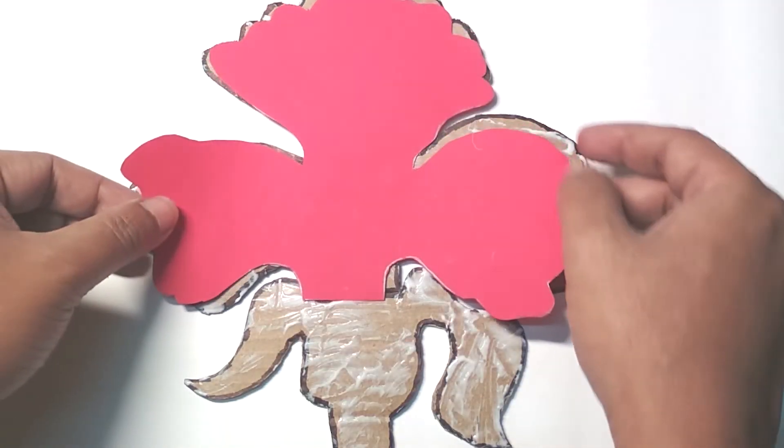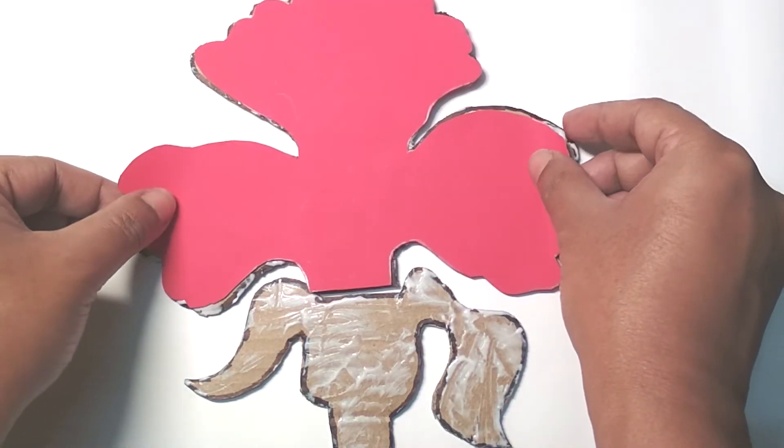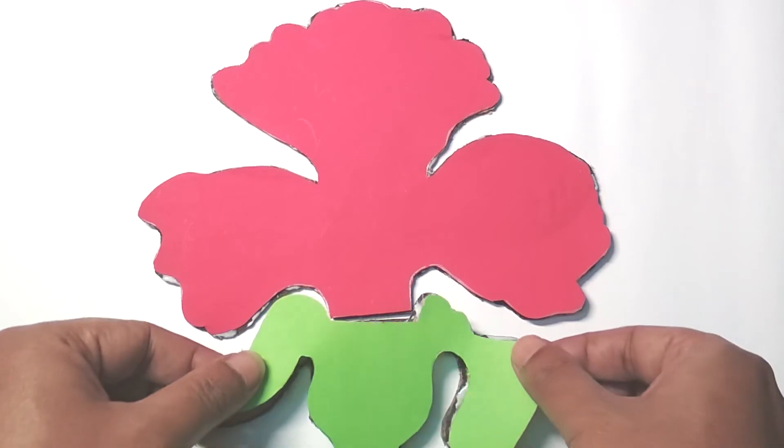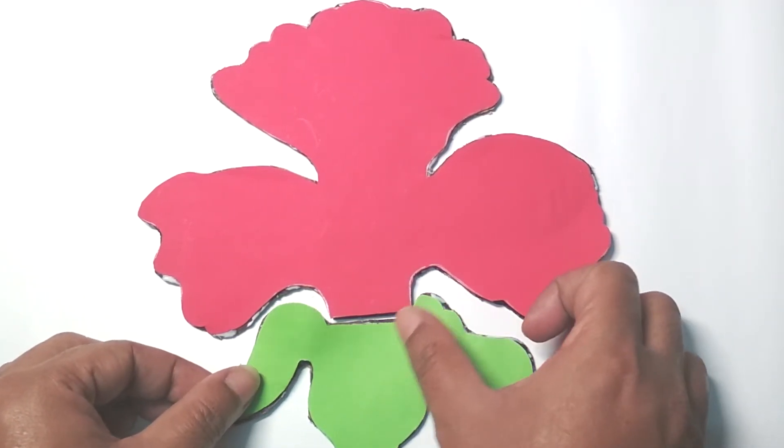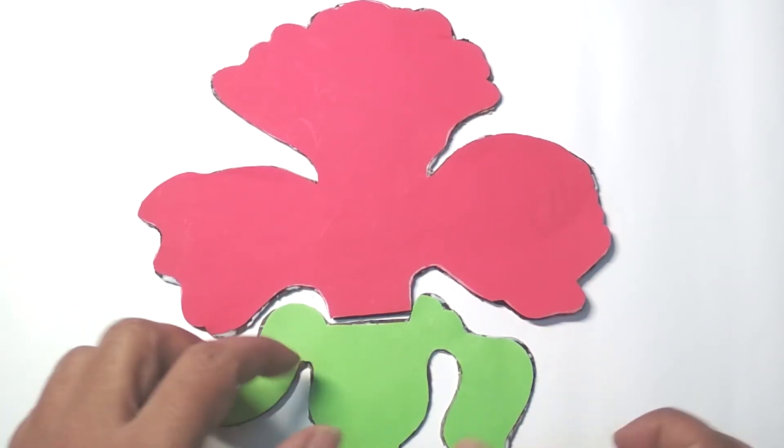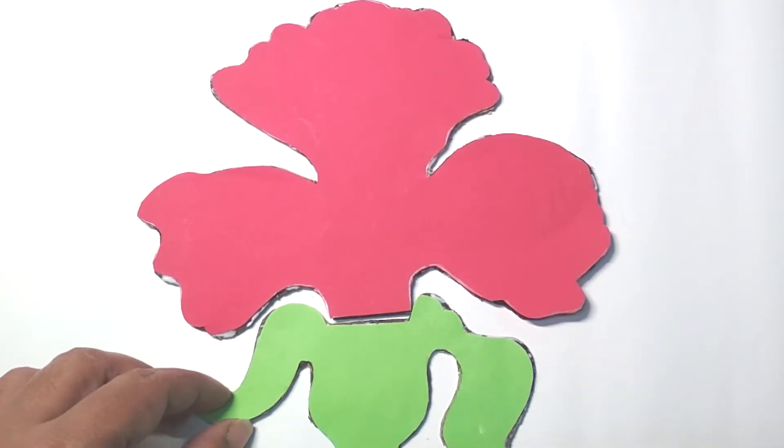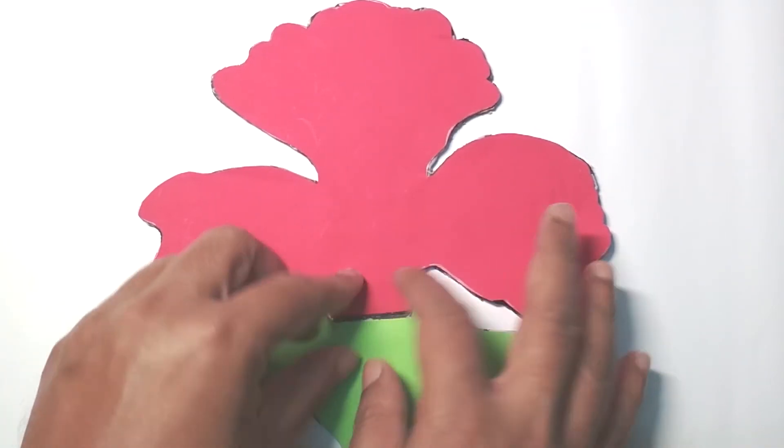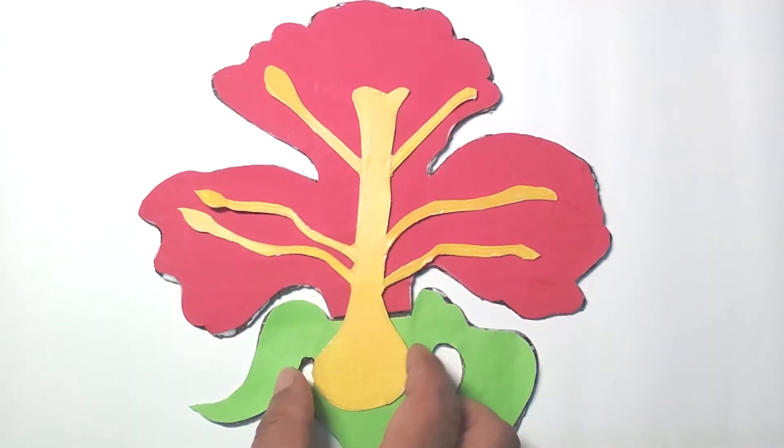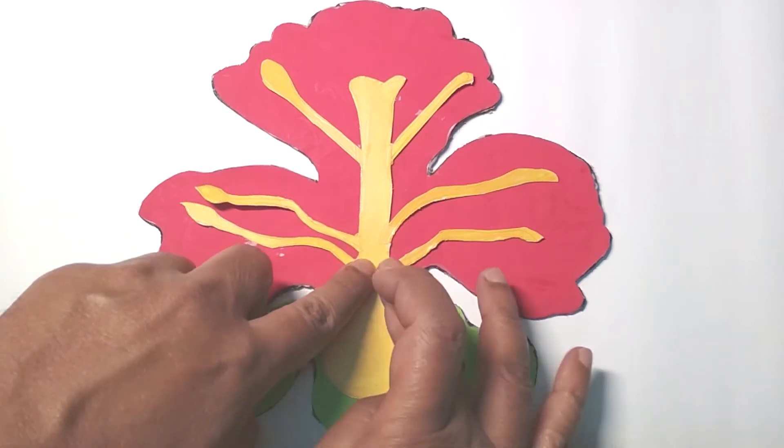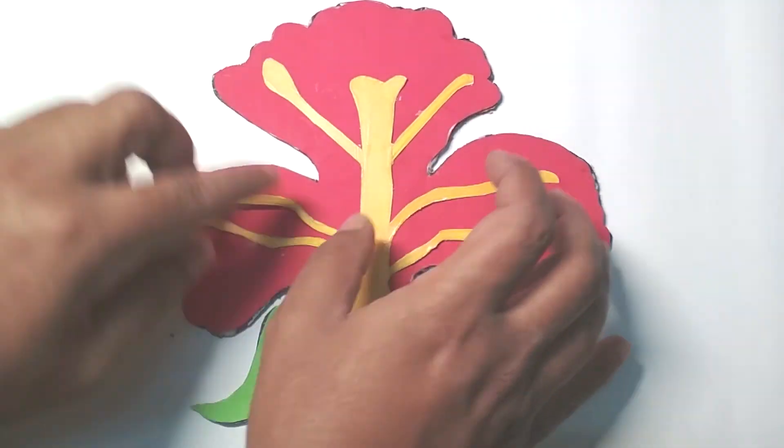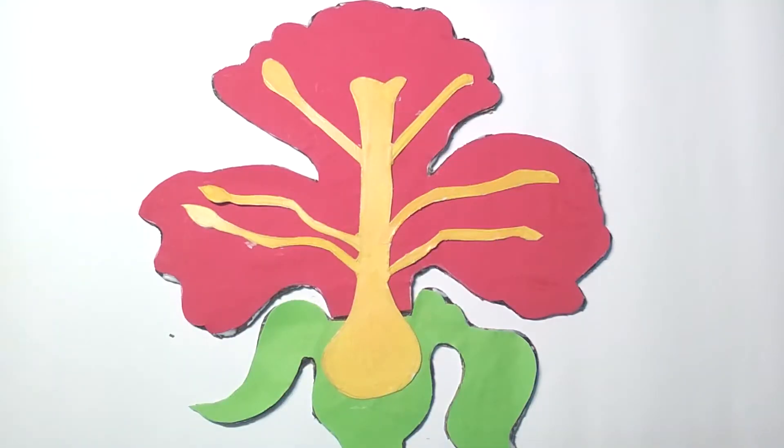You must design and create a three-dimensional 3D flower with various supplies. You must label all the parts of the flower you create, including male and female parts. Furthermore, you must also write a brief description of each labeled part of flower in at least two sentences.